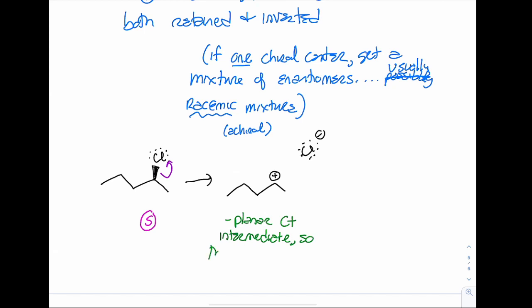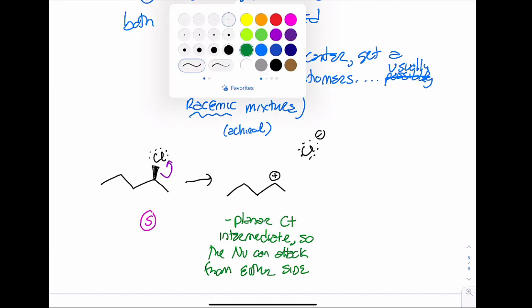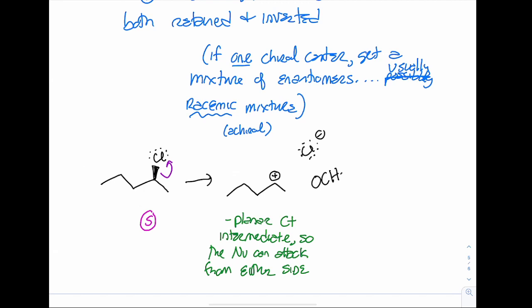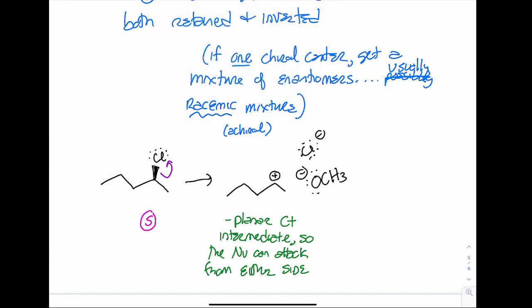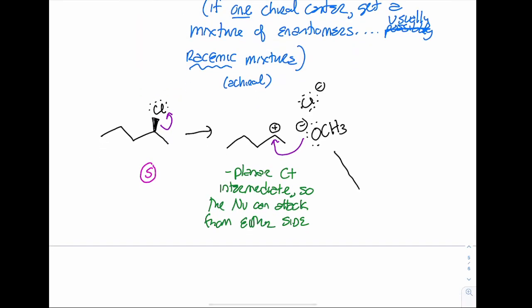The electrons that were in that bond go onto that chlorine — chlorine had three lone pairs and it's going to have four once it has left. That carbon where the chlorine was bonded is now electron poor because chlorine took those electrons. Remember, leaving groups are accepting that electron pair. So I have my carbocation intermediate — it's planar — and the nucleophile can attack from either side. Let's use methoxide as my nucleophile.